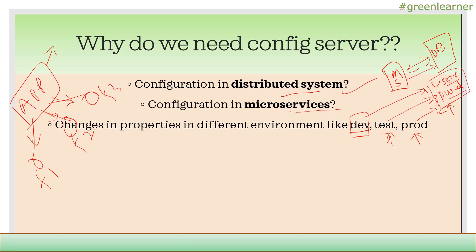But you can do the changes in properties. What I mean by properties: if you are following microservices and developing, we have a properties file and also YAML, where we define the configuration properties of the application. Here we are taking the example of database where we define the username and password. In certain scenarios it can be a third-party URL where you need different keys in different environments, because they are providing some API for dev, test, and production environments. So how do we make changes to properties effectively without changing the code? This is where config server plays an important role.